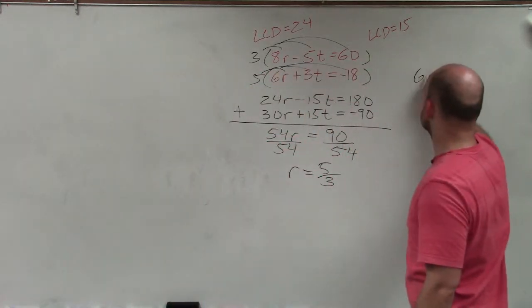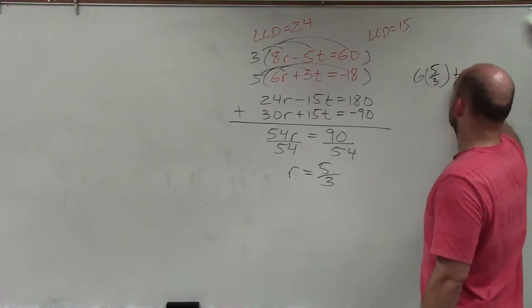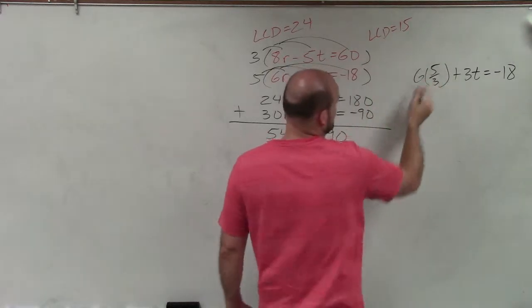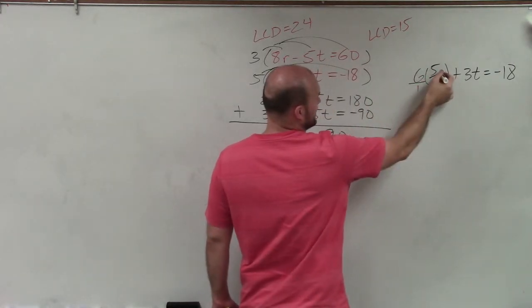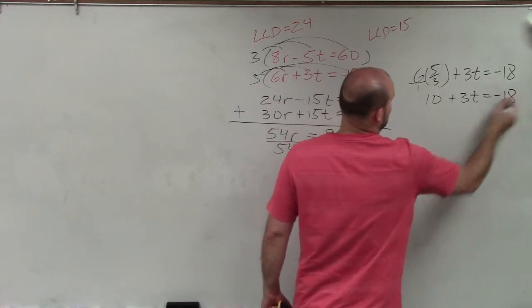So I have 6 times r, but we know r is 5 thirds, plus 3t equals a negative 18. Well, 6 times 5 thirds, just multiply that across, that becomes 10, plus 3t equals negative 18.